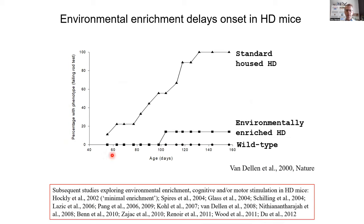Until we did these experiments, Huntington's was one of these monogenic disorders considered the epitome of genetic determinism — considered 100% genetic. So we were kind of blown away by these initial findings. The wild type normal mice, in both environmental groups, never showed a deficit on this motor task, this horizontal rod task of motor coordination, which we know is sensitive to motor deficits in this HD model.